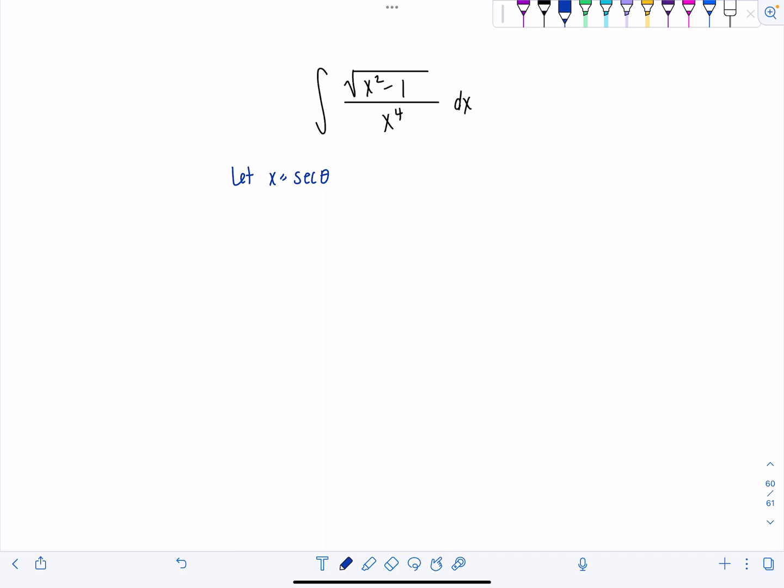Then we have to find dx. Derivative of secant theta is secant theta tan theta d theta. So now we're ready for action. Let's rewrite this integral in terms of theta.